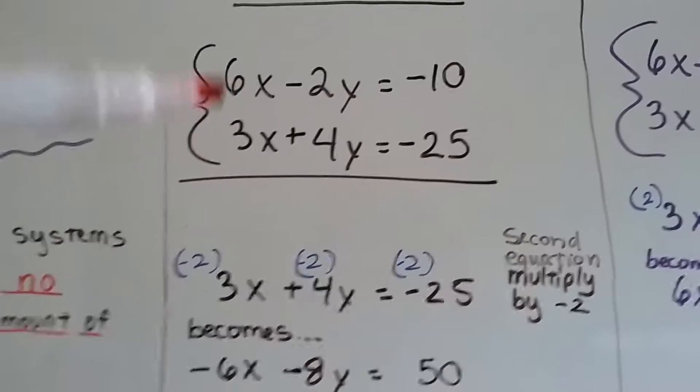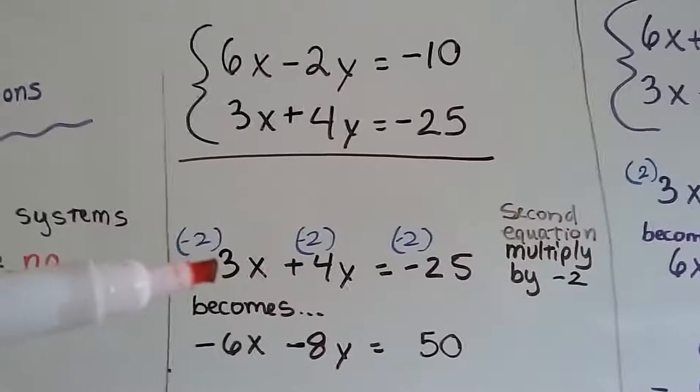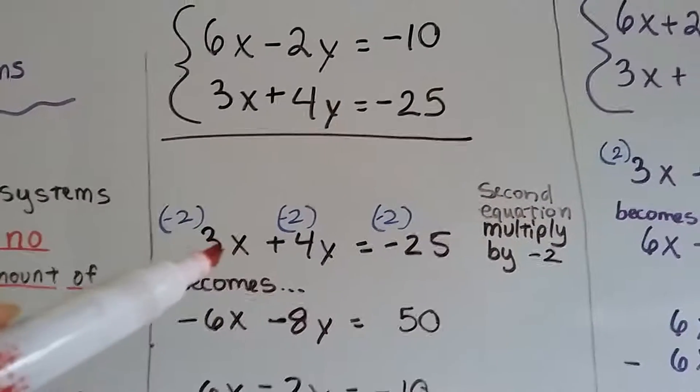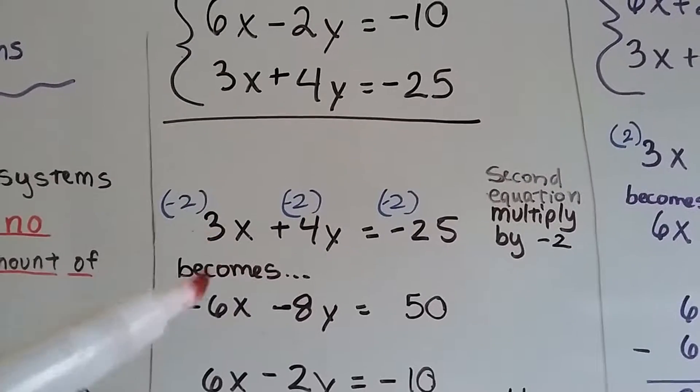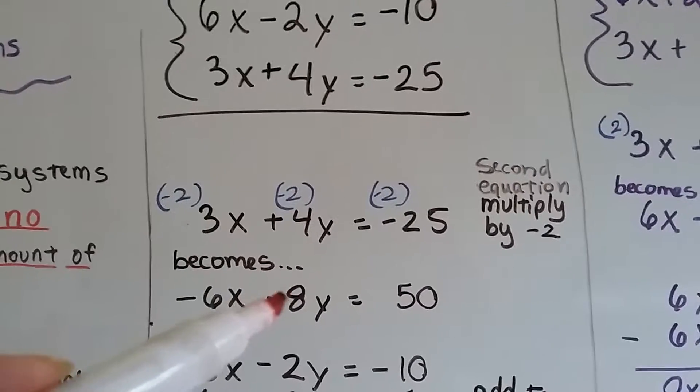I chose to multiply this one by negative 2. So the second equation: 3 times negative 2 is negative 6, positive 4 times negative 2 is negative 8, and negative 25 times negative 2 makes positive 50.